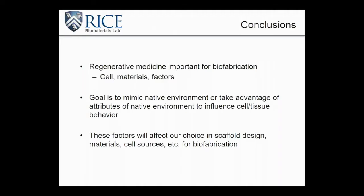With that, I want to wrap up the regenerative medicine discussion, keeping in mind the effect that different cells, different materials, and different factors have on tissue engineering, and how we can apply those strategies to biofabrication. The overall goal of tissue engineering is to mimic the natural environment or take advantage of its attributes to influence cell and tissue behavior. It's not always possible to exactly replicate all the complex interactions within the extracellular matrix, but if we can find those important elements — such as the relevant growth factors — and apply them into a bio-ink, we can better encourage our tissue scaffold to act in a way that's more helpful to our purpose. All these factors affect our choice in scaffold design, the materials we use, and the cell sources we use.